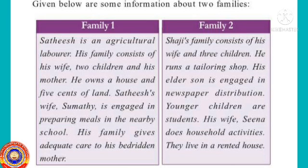Children, have you read it? What can you learn from this? The sources of income are different for these two families. The first family gets income from agriculture and preparing meals in school. The second family gets income from tailoring and newspaper distribution.